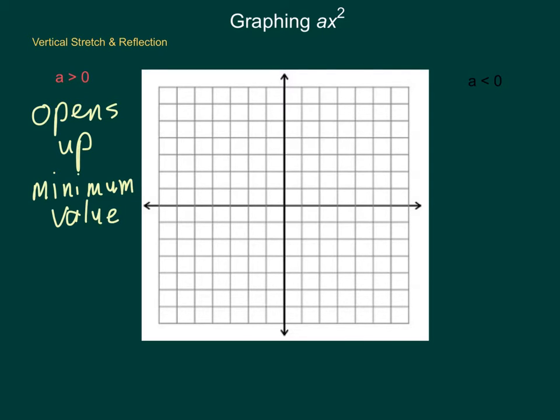So if it opens up and has a minimum value, how exactly does this graph look? Well, if I were to graph the function y equals 1x squared, it would have its vertex at the origin, and then whatever movement I make away from that origin, I'm going to square it for my vertical value. For instance, if I move to the right one, what would 1 squared be? Well, 1 squared is 1, and I get a point here. If I were to move to the left one, at negative 1, and square negative 1, well, negative 1 times a negative 1 is a positive 1, and I end up there.